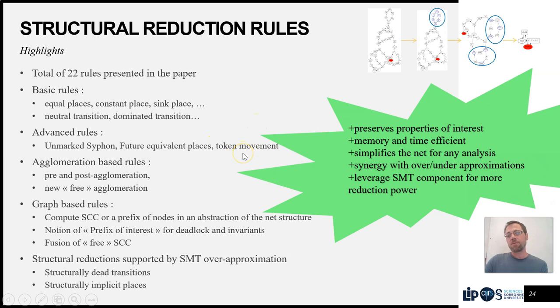And even some new rules that involve token movement. This is in the case that we could agglomerate a place, but it is initially marked, which is a precondition preventing the application of agglomeration. Well then, if there is a single output for this place and it's stuttering, let's move the token out of there so we can actually perform the agglomeration. This is a good idea.